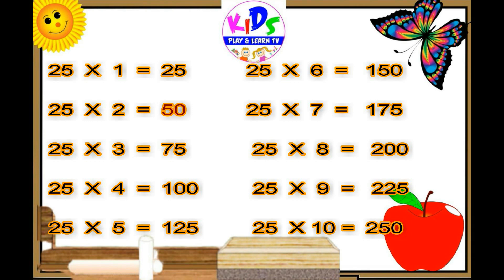Twenty-five eights are two hundred. Twenty-five nines are two hundred twenty-five. Twenty-five tens are two hundred fifty.